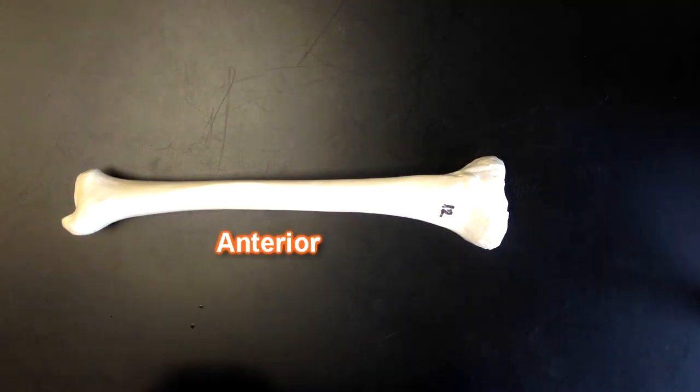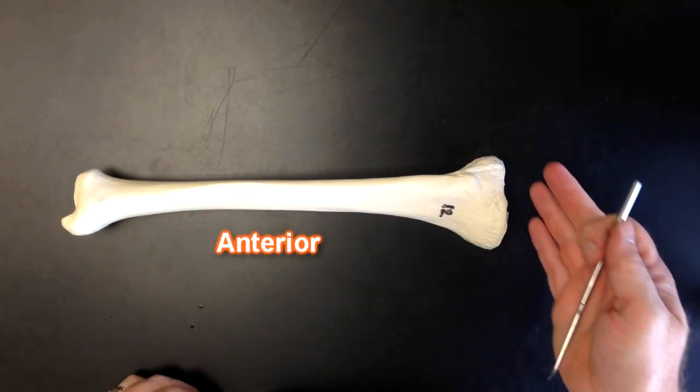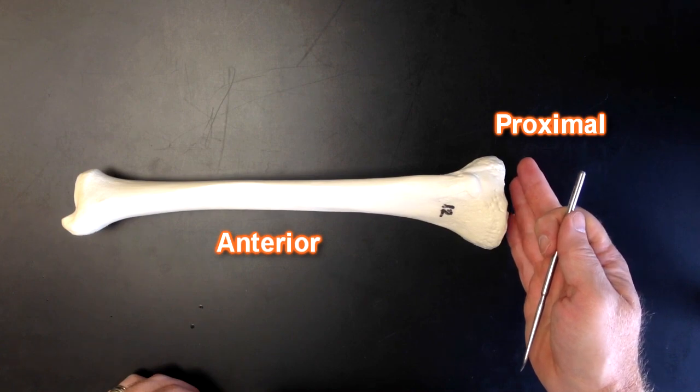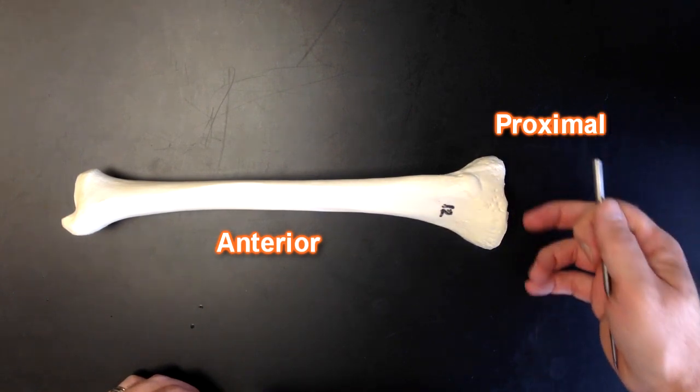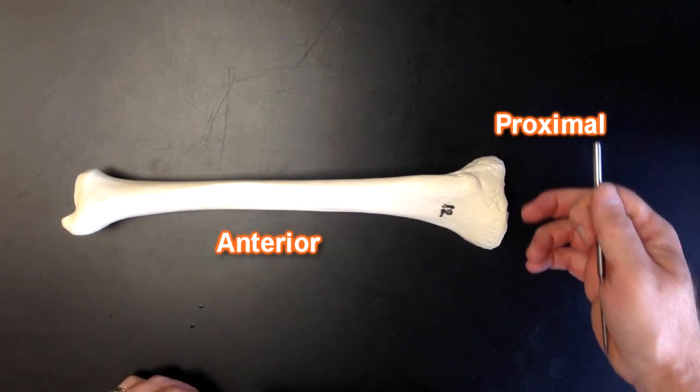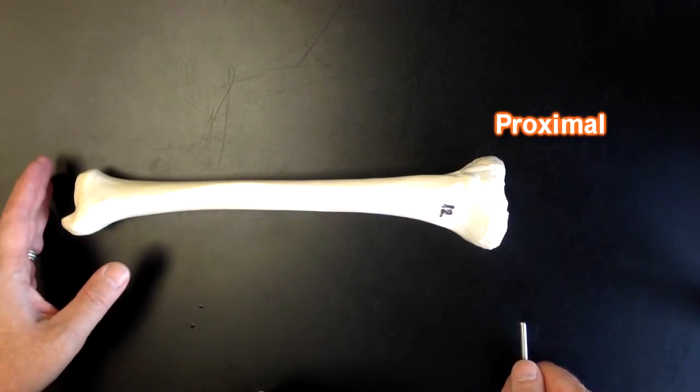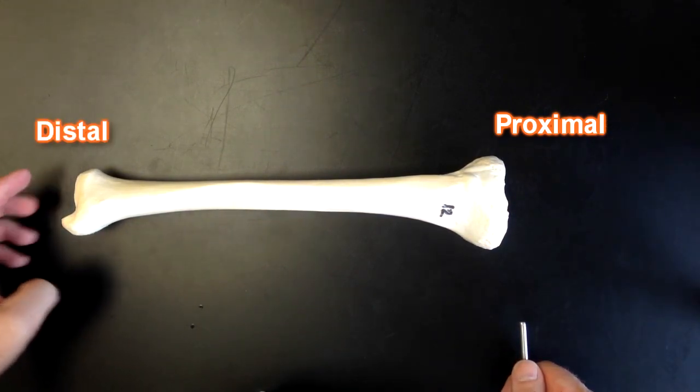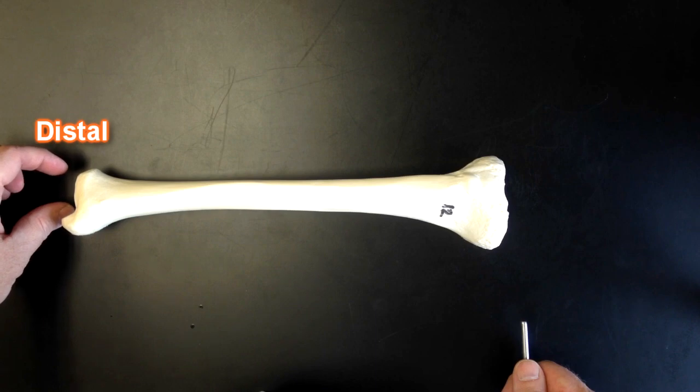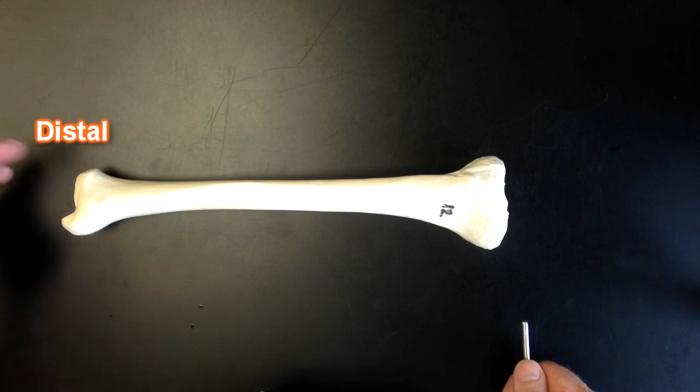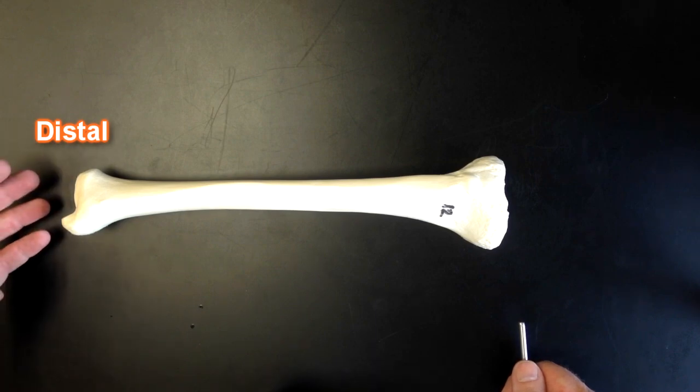Right now we're looking at the anterior surface of the tibia. The proximal end of the tibia would be up here, where it articulates with the femur to form the knee joint. This is the distal end of the tibia, and this part of the tibia will articulate with the top bone in the foot, known as the talus.